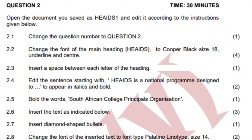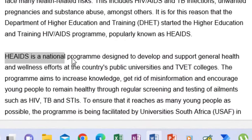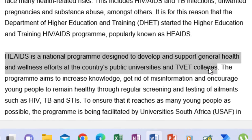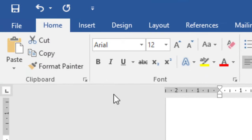When they say edit the sentence starting with 'HIS is a national program designed to' to appear in italics and bold. So if you look there at paragraph two — 'HIS is a national program' — they said edit the sentence, so I will highlight up until I see the full stop. That is the end of the sentence. I'm going to edit this sentence to appear in italics — I click italics — and then I will also make it bold. Then I click B.